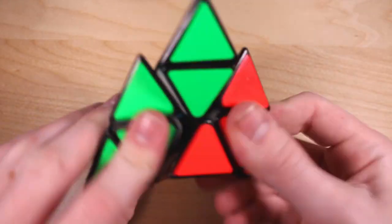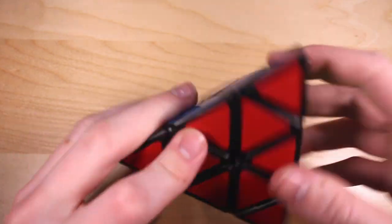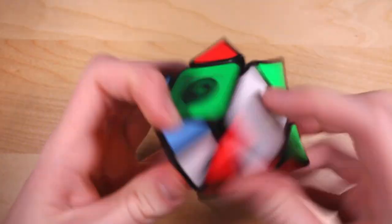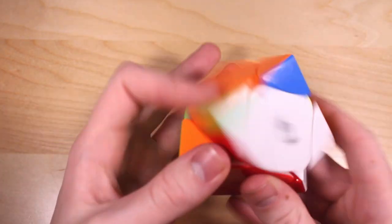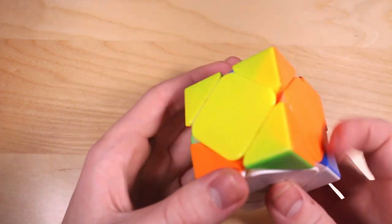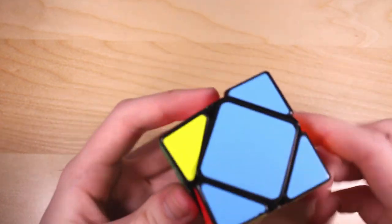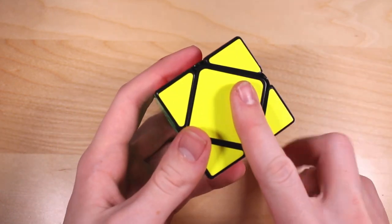MoYu Magnetic Pyraminx. Fantastic Pyraminx. Original MoYu Pyraminx. Still pretty good. X-Man Wingy Skewb. This is an excellent Skewb. Cyclone Boys Skewb. Another excellent Skewb. Original Qi Yi Skewb. Oh. Wow. This turns a lot better than I thought it did. Good puzzle too.